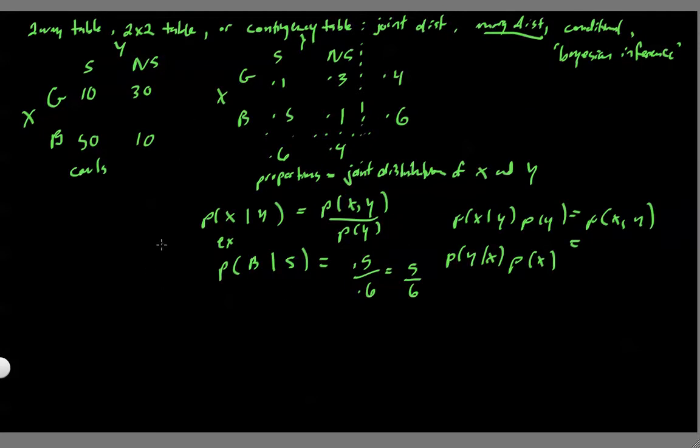So if we don't know anything about the person that we've selected, the best we can do is go to our marginal and say, the chance that they're a smoker is 0.6 and the chance that they're not is 0.4. But we can do better than that if we give ourselves some more information.